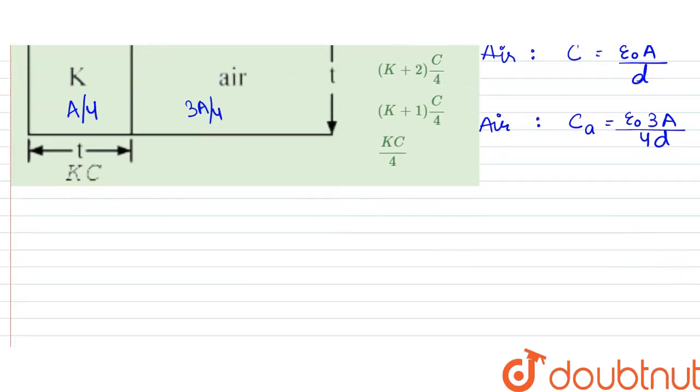For dielectric, it would be equal to C_k, which is K epsilon naught A by four into d.